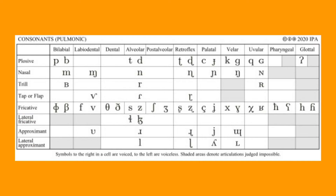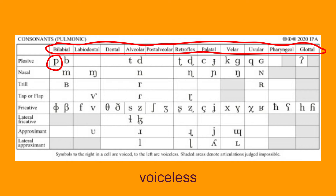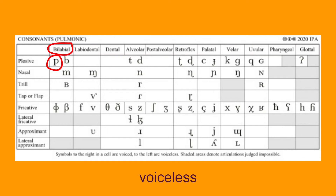Now that you understand these three things, let's practice reading this chart. Try pronouncing this symbol — the one that looks like a lowercase p. First, we need to determine if the consonant is voiceless or voiced. Looking at the chart, we can see that the symbol is leaning towards the left. This means that the sound is voiceless, meaning you don't vibrate your vocal cords when pronouncing it. Next, we need to determine the place of articulation. Looking at the chart, we can see that this sound is bilabial — this means we pronounce the sound where the lips are located.